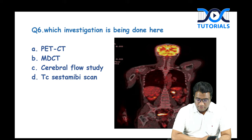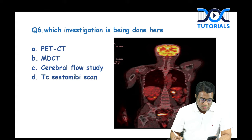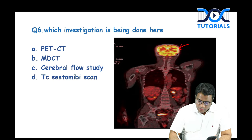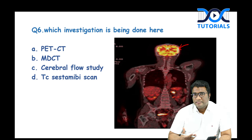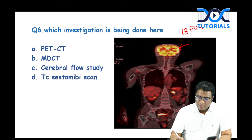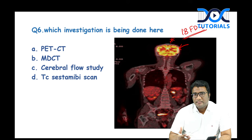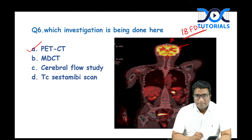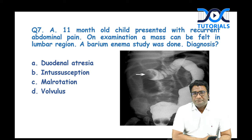Another question: identify the investigation — is it PET CT, MDCT, cerebral flow study, or sestamibi scan? The clue is that the cortex of the bone appears white (indicating CT), and there is high uptake in the brain parenchyma. Neurons use glucose as their primary energy source; PET uses 18-FDG (18F-fluorodeoxyglucose), explaining the brain uptake. Bone cortex white + brain uptake = PET CT.